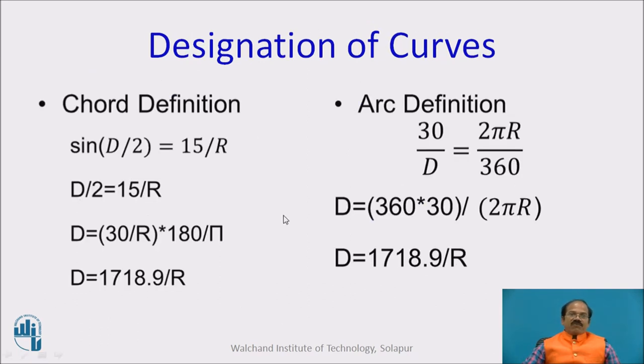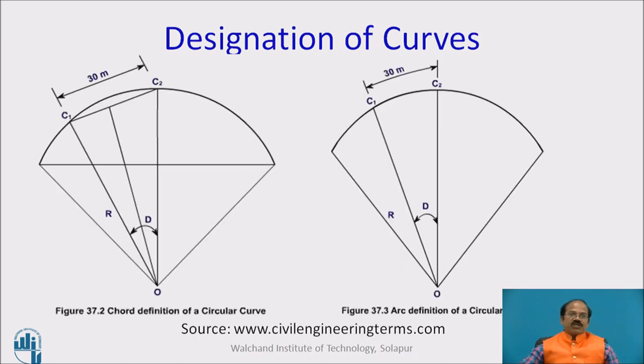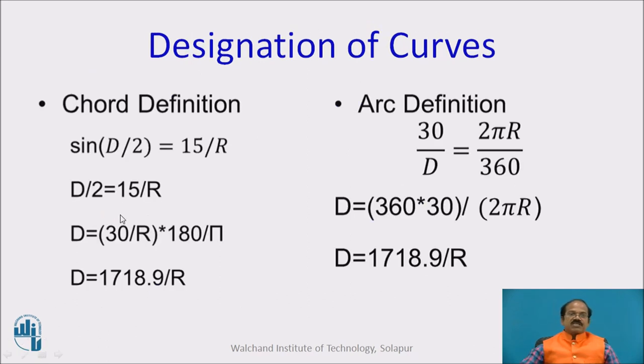In the chord definition, sin(D/2) equals 15/R. As shown here, this particular angle is 90 degrees, and therefore sin(D/2) will equal 15 meters divided by R. But because the angle is so small, D/2 will be taken equal to 15/R, and hence D equals 1718.9 divided by R.